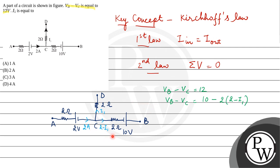See, in this branch, the current direction is opposite to the direction we are measuring the potential difference. That's why we have a negative sign here.